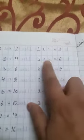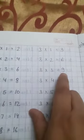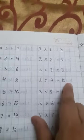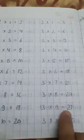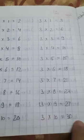3×1 is 3, 3×2 is 6, 3×3 is 9, 3×4 is 12, 3×5 is 15, 3×6 is 18, 3×7 is 21, 3×8 is 24, 3×9 is 27, 3×10 is 30.